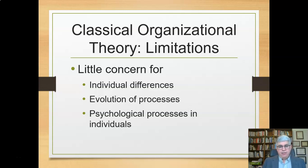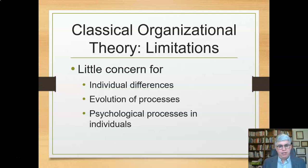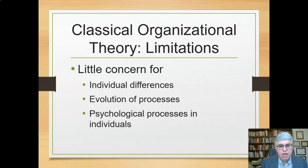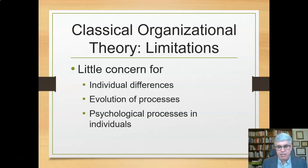Classical organizational theory is nice with its boxes and lines, but it doesn't take into consideration all kinds of things we study in organizational behavior — like individual differences, people's personalities, preferences, thoughts, feelings, and behaviors. It doesn't account for how things evolve, how processes change, how organizations learn, or the psychological processes of individuals that show how things might change within the organization. So other theories have developed.